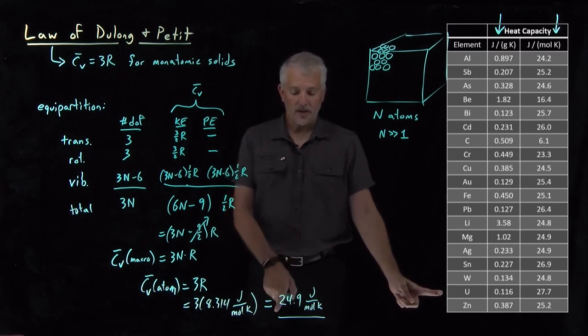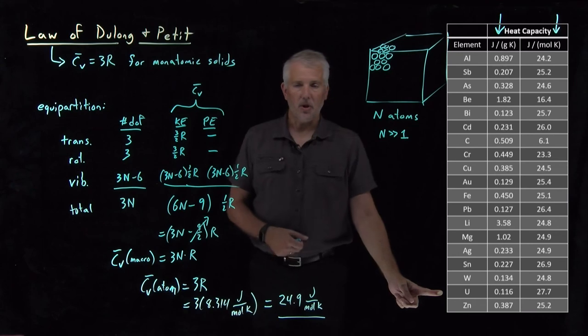Uranium is 27.7. That's starting to look a little too high, much larger than 24.9 joules per Kelvin.